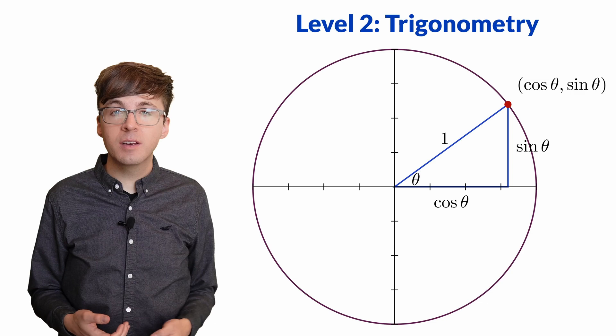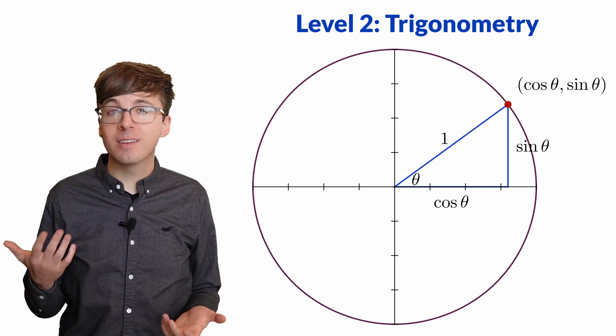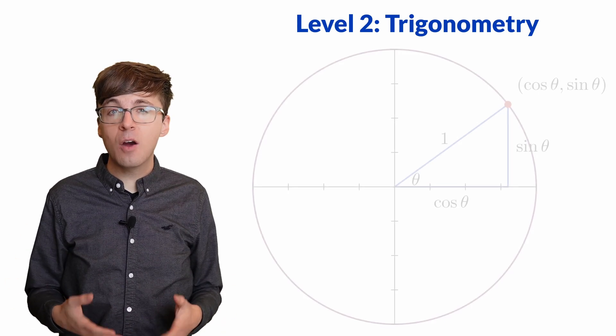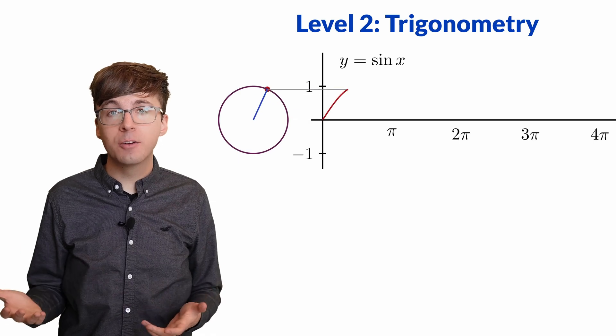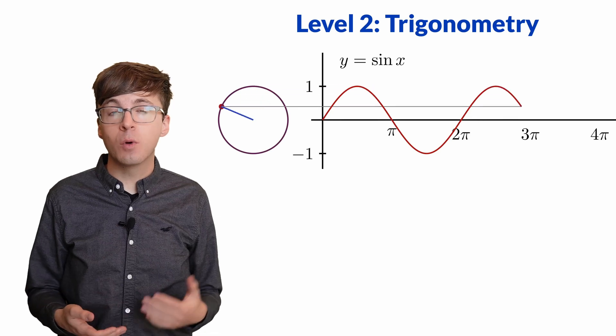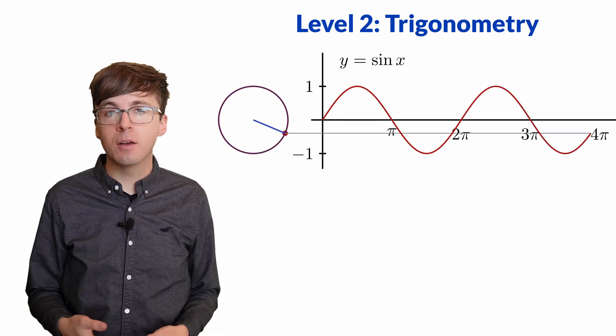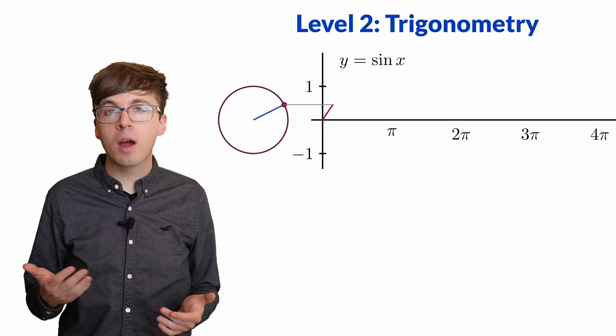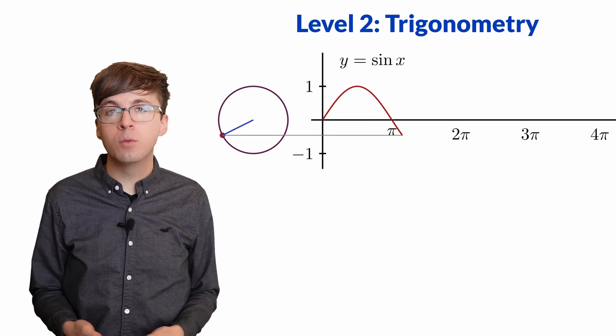The x-coordinate is the cosine of the angle, and the y-coordinate is the sine of the angle. Now we can push the angle past 90 degrees into the second quadrant and beyond, and we can still make sense of what the sine and cosine of the angle should be, the x and y coordinates of the point on the unit circle.